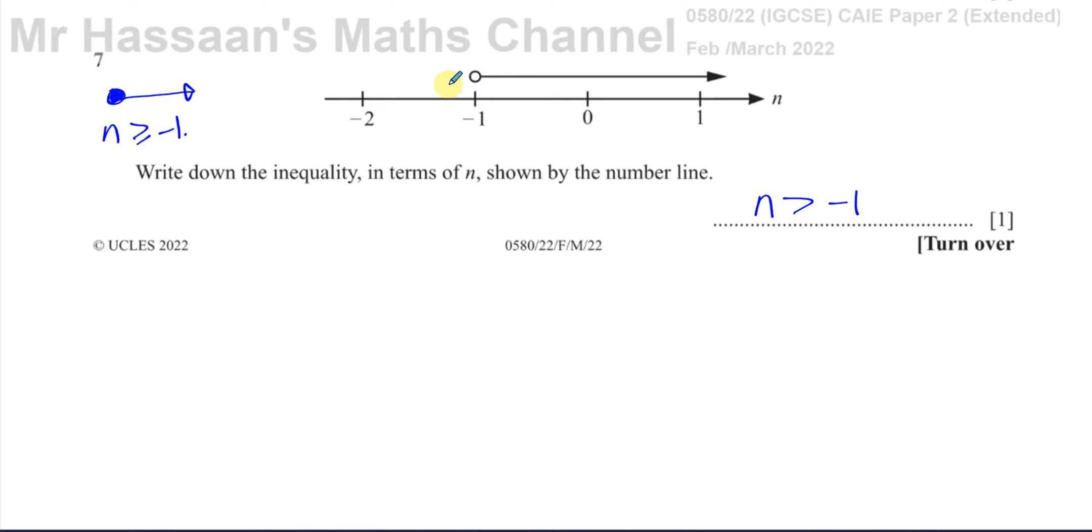If the arrow is pointing to the left, then it would be less than, because it would be the numbers less than that. So that includes all the numbers greater than minus 1, including all the decimals, like minus 0.9999 or whatever, all the way up until positive infinity. So everything just above minus 1, all the way to positive infinity, includes all those numbers.